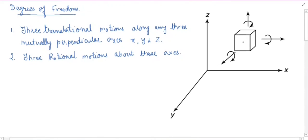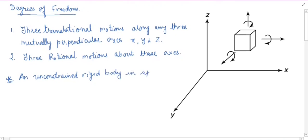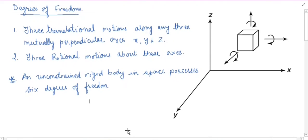It can move in the x direction, it can move in the y direction, it can also move in the z direction. Similarly, this body is free to rotate about the x axis, about the y axis, and about the z axis. Thus, an unconstrained rigid body in space possesses six degrees of freedom. In short, degrees of freedom can be defined as the number of independent motions that a body can have, whether translational or rotational.